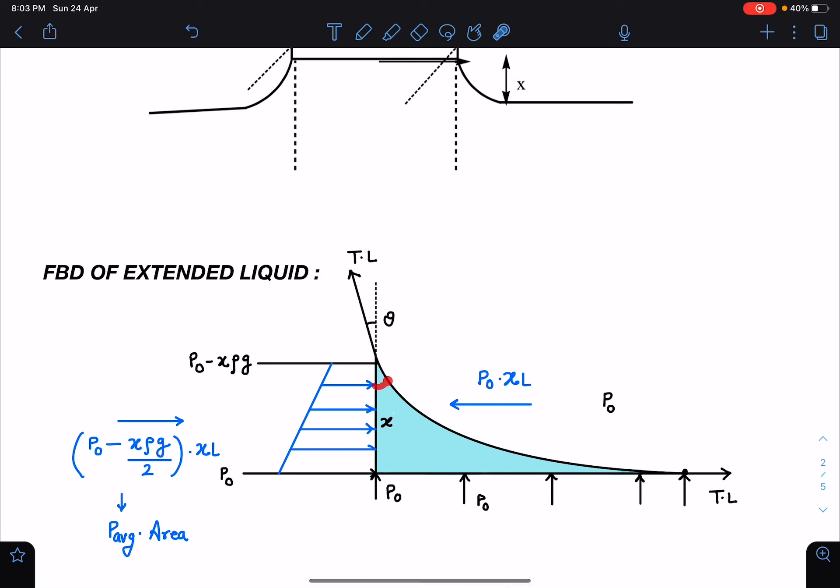Let's say here it makes an angle of θ. So T into L - remember in this entire length this force is acting. T into L is this force, atmospheric pressure P₀ into this projected area will be the force here. And this part, when linear variation is given, directly we can write as average pressure into cross-section area. Pressure at top and pressure at bottom, if you add divided by two you will get the average pressure value.